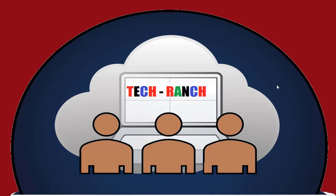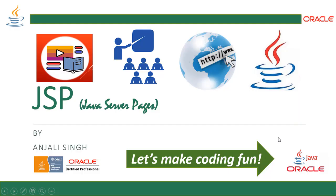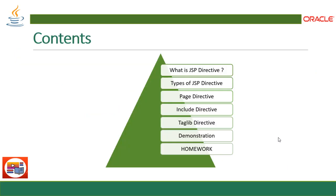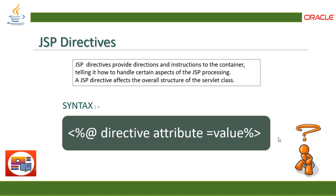Hi, welcome to Tech Ranch, a place where we learn and earn technical skills in the most efficient way. Let's make coding fun. JSP Java Server Pages, Chapter 2: JSP Directives. In this chapter we are going to learn all about JSP directives in detail. We'll cover what is JSP directive, types of JSP directives, then page directive, include directive, tag library directive, demonstration with example, and a homework for practice.